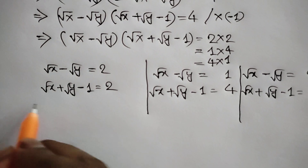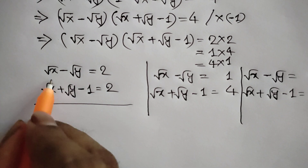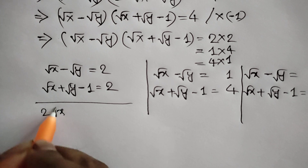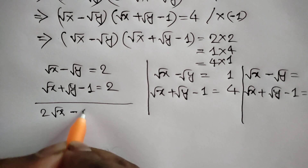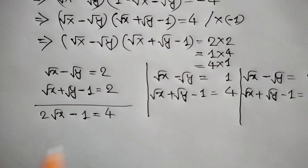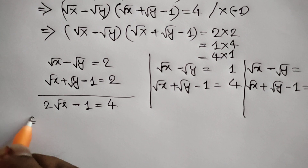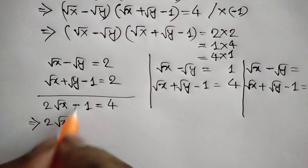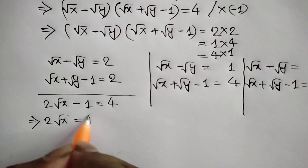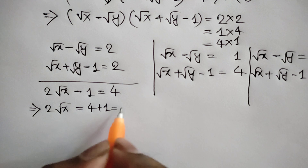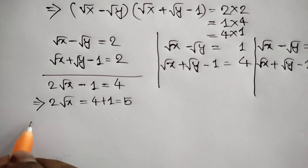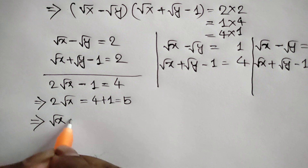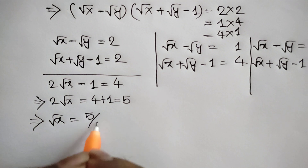Now adding these two equations we will get 2 square root of x minus 1 is equal to 4, or 2 square root of x — taking negative 1 to the right side — we get 4 plus 1 is equal to 5, or dividing both sides by 2 we will get square root of x is equal to 5 over 2.